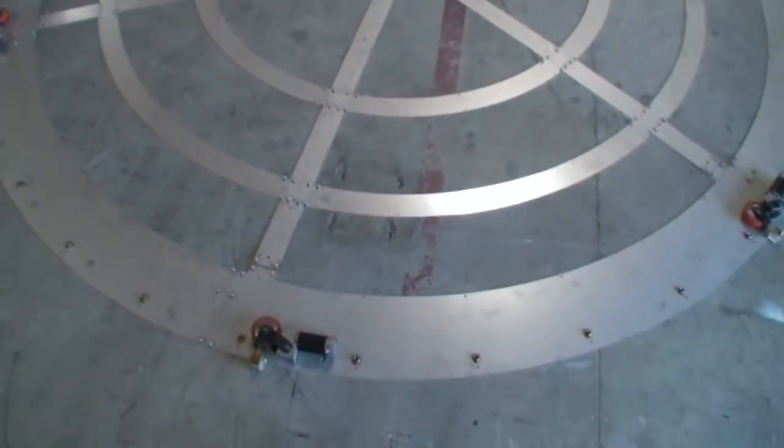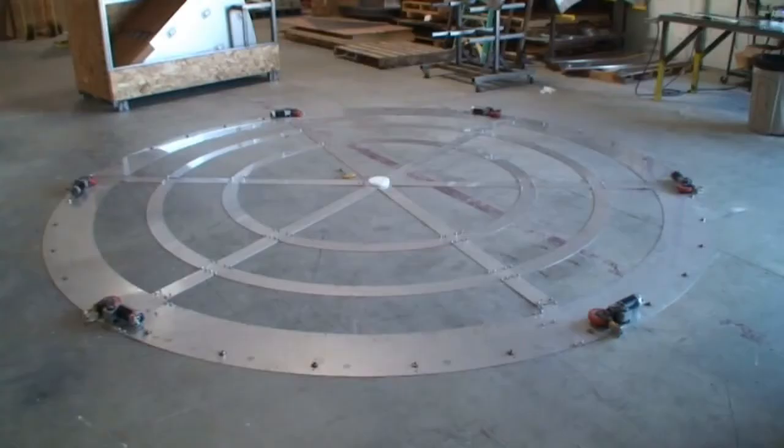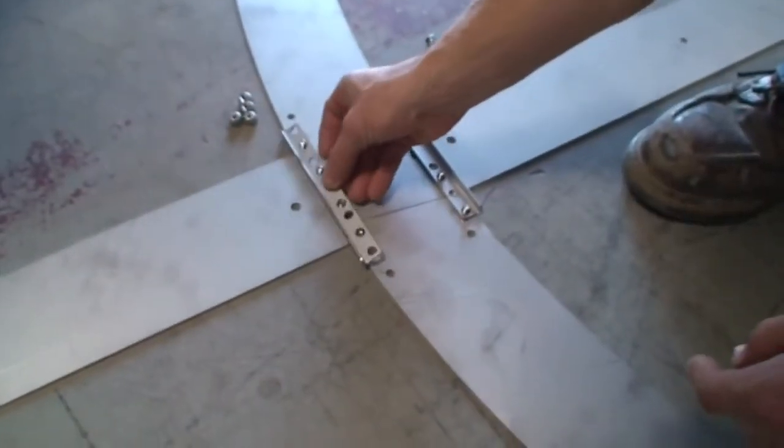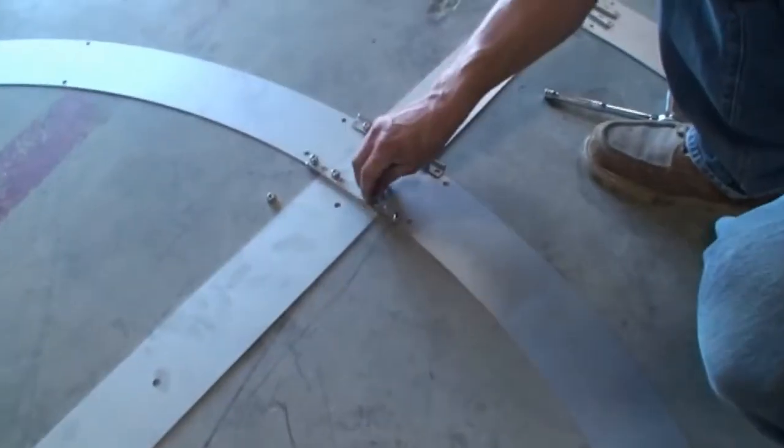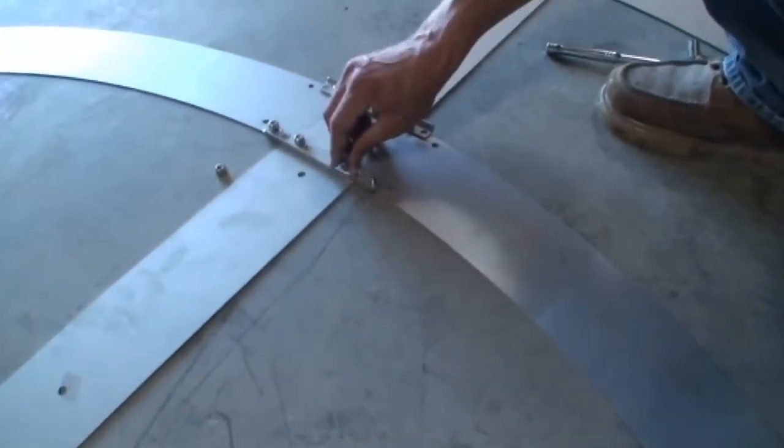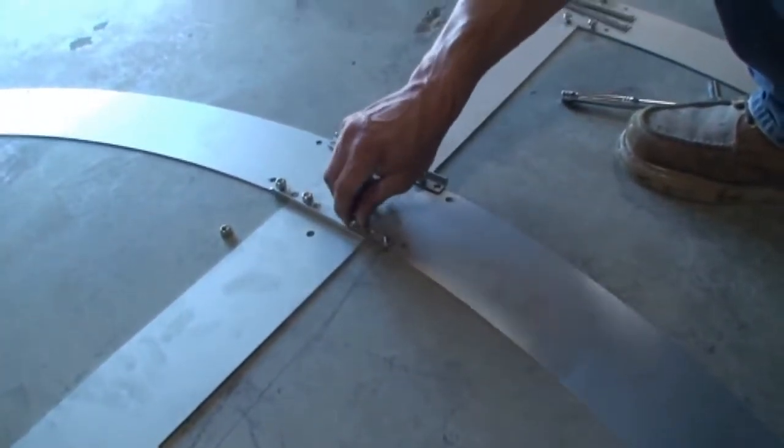This is what the finished spider is going to look like. Next, you're going to put down the clips that hold this together. Notice these clips have an L shape and a high part. The high part always goes to the outer edge of the rings.